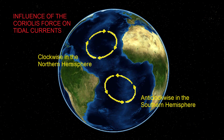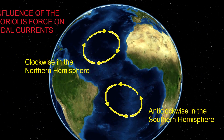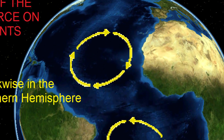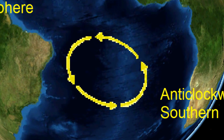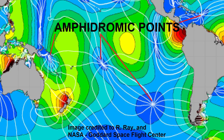Rather than travel in a straight line, this motion is affected by the Coriolis effect, causing the wave to bend to the right, creating clockwise movement in the northern hemisphere and an anti-clockwise movement in the southern hemisphere. The wave rotates around the node called an amphidromic point, which experiences no tidal fluctuation. The resulting circulatory system is called an amphidromic system.